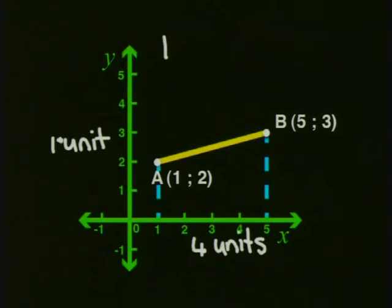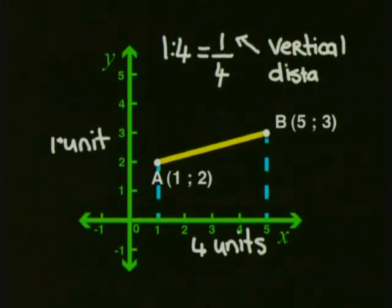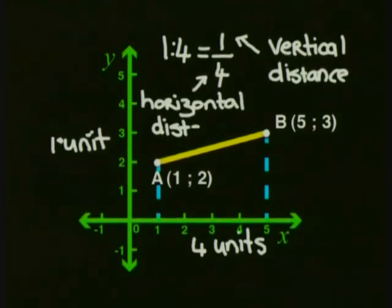When you write 1 to 4, it is the same as 1 over 4 or 1 divided by 4. So you can also say that the numerator or the top number is the vertical distance and the denominator or the bottom number is the horizontal distance.